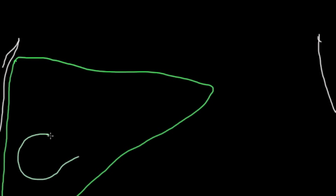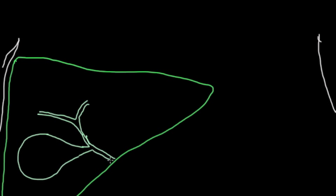So I'm going to start off by drawing the belly, and there's a gallbladder that I'm drawing. The gallbladder is located within the liver, and that's the big green triangle.